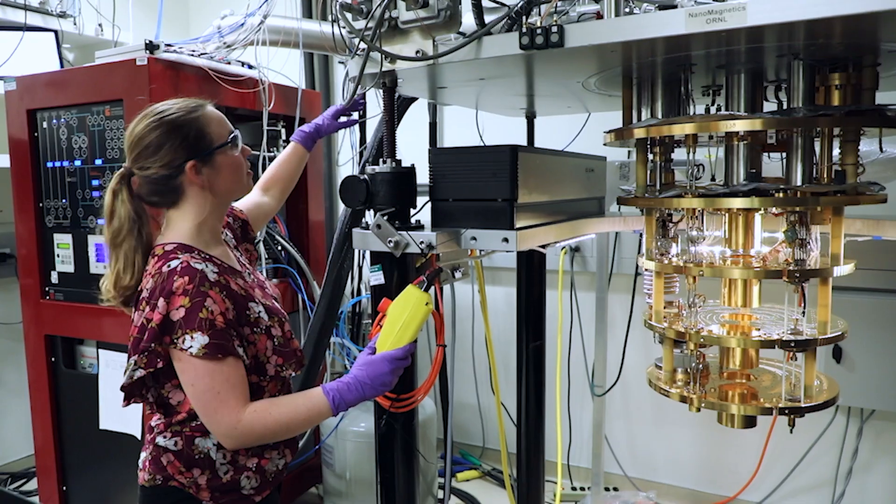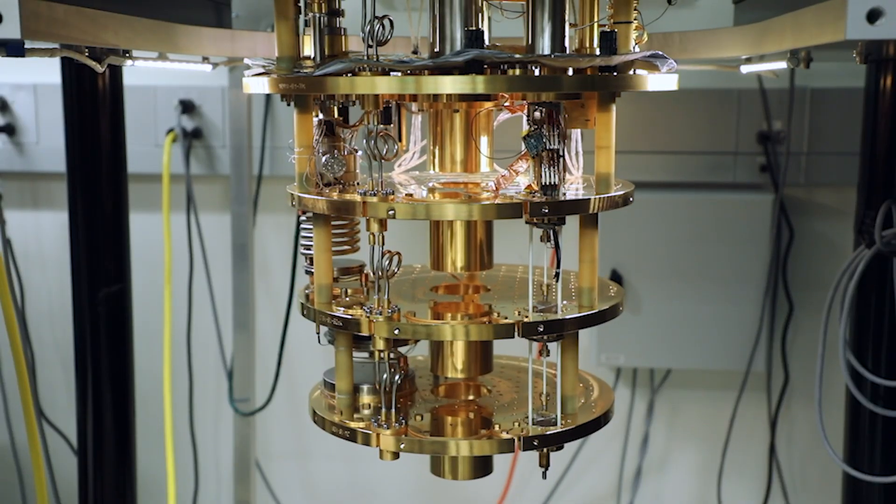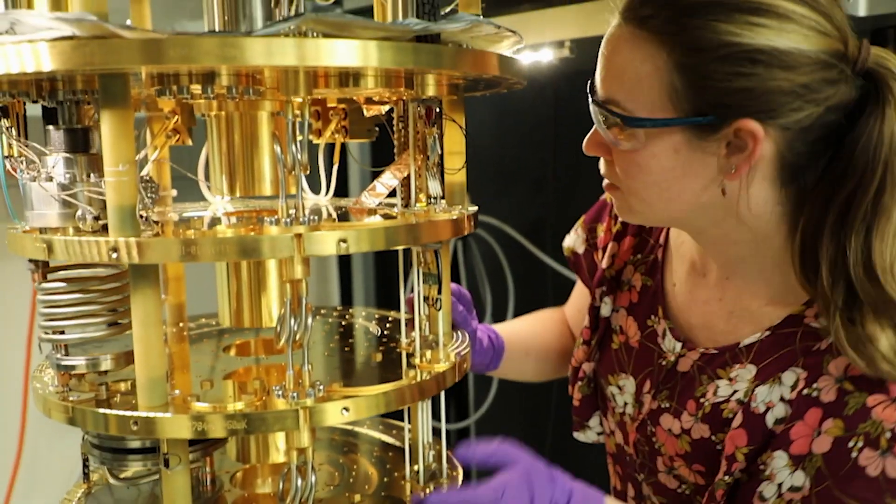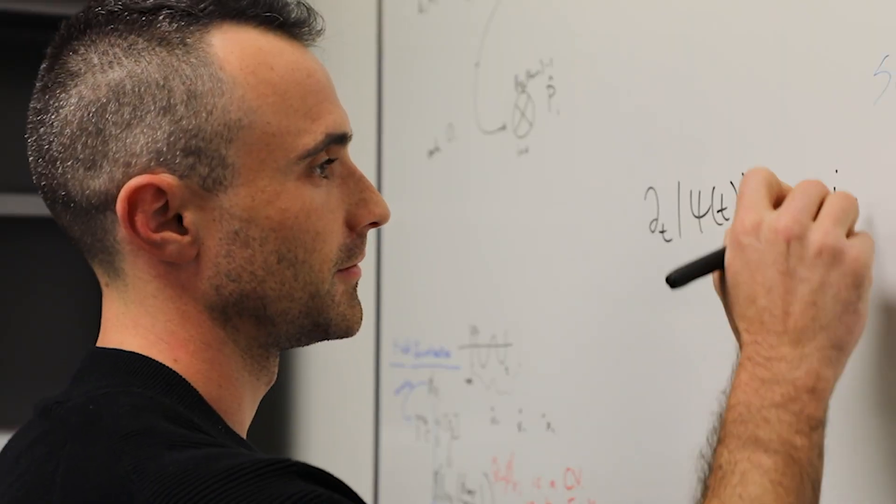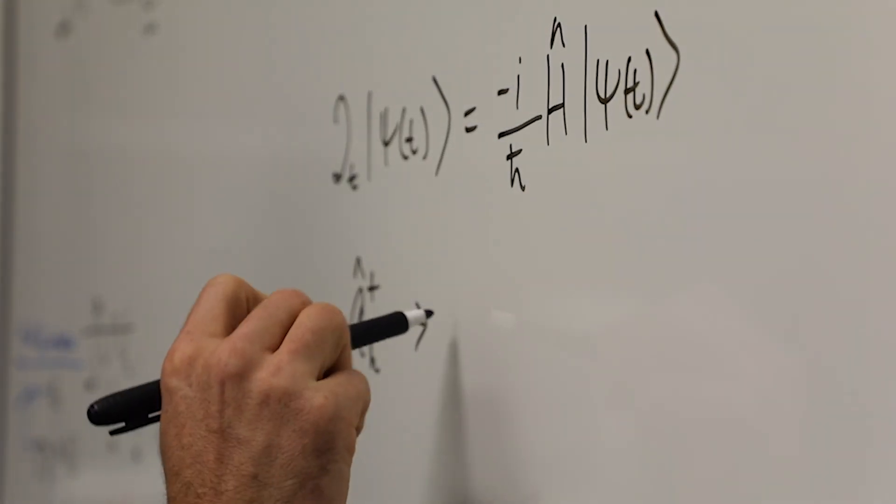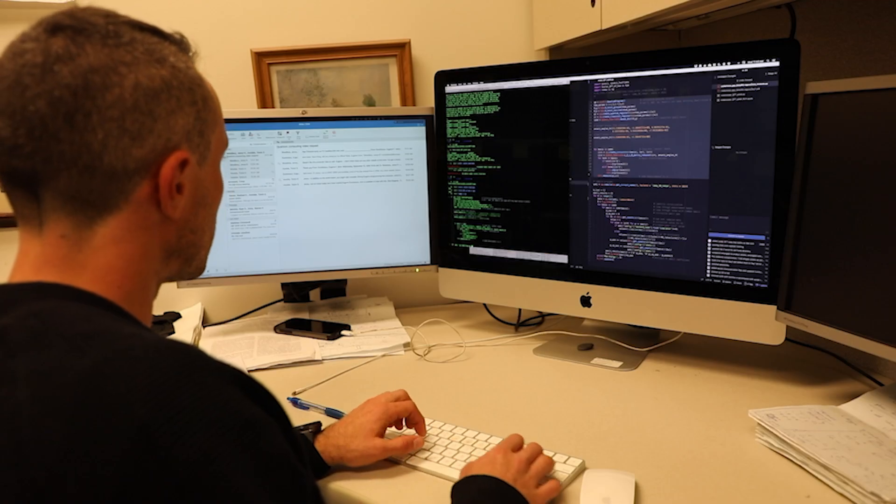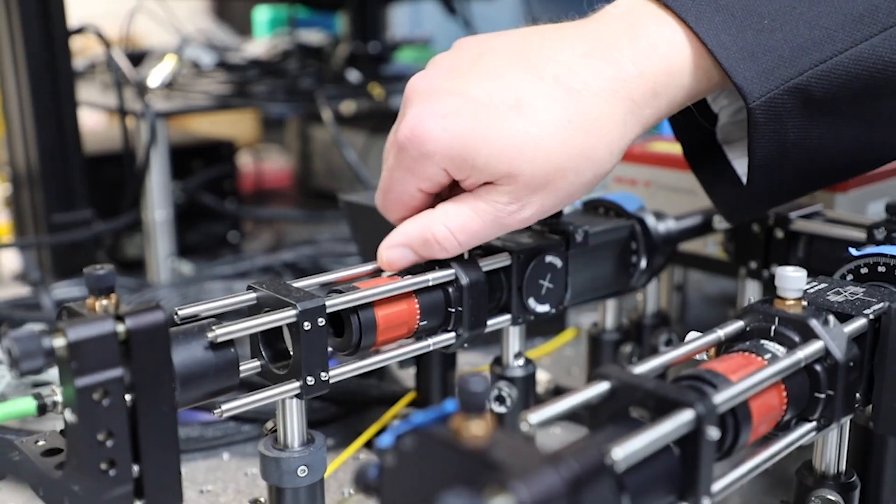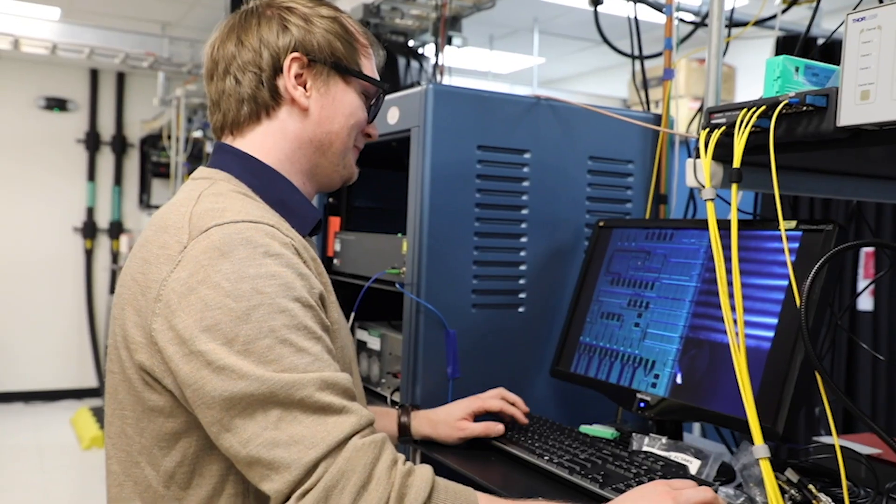ORNL itself has an education program where we have multiple ways in which we can fund students to come and work at Oak Ridge National Lab. In partnership with UTC, we can share mentorship of these programs and bring those students into our labs to work alongside the scientists to help develop the technologies which they're doing.